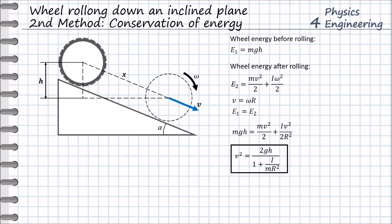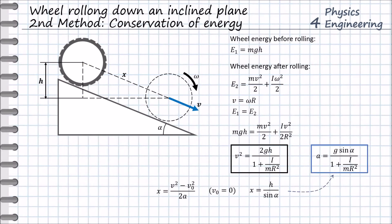Then we find the linear acceleration of the wheel in the same way as for the first method, taking into consideration the relation between path, velocity, and acceleration. Using the triangle geometry to get x, we arrive at the linear acceleration as a final result. We can see that the formulas for speed and acceleration are the same as obtained by the first method.